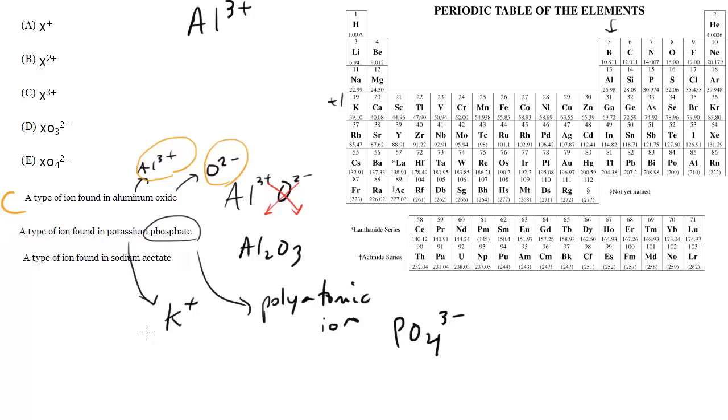Well here it is A, here is our singleton K plus right here. Notice that we have a XO4 but it's two minus instead of three minus so E doesn't work for this one.